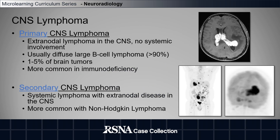CNS lymphoma can be brought up in two categories: primary and secondary. Primary CNS lymphoma is an extranodal lymphoma presentation only in the central nervous system without systemic involvement, as seen in the image on the top of the slide from a patient who presented with brain masses without systemic involvement. This will usually be a diffuse large B-cell lymphoma, making up between 1 and 5% of brain tumors, and is more common in the setting of immunodeficiency.